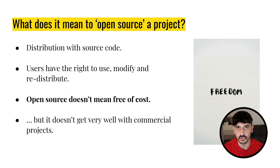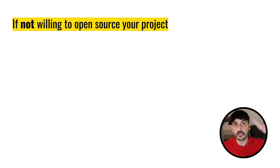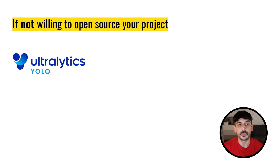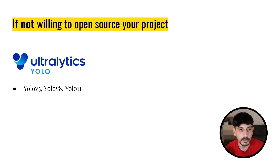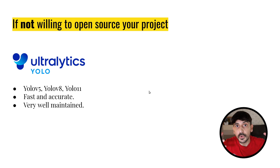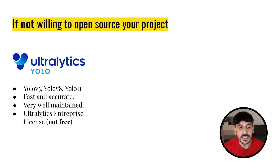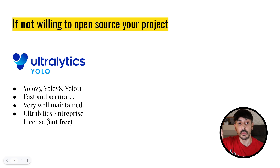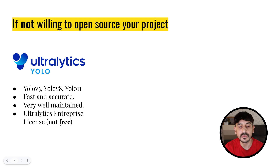If you are not willing to open source your project, I think these are the most important options for you. You can go for Ultralytics YOLO — referring to YOLO v5, YOLO v8, and YOLO 11. Ultralytics YOLO is a very fast and very accurate object detector, and it's also very well maintained since there is an entire company maintaining the product. However, if you're not willing to open source your project, you will need to purchase an Ultralytics enterprise license, so this option is not going to be free.